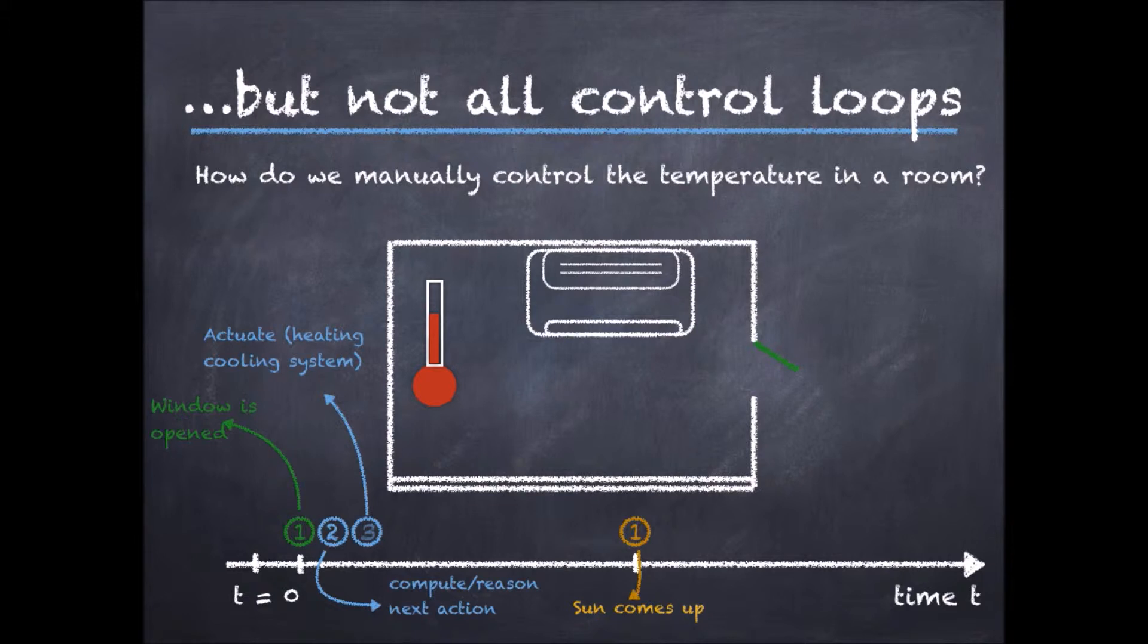And only then an appropriate action needs to be selected and enforced. Again another event might happen and the human operator is called to act. The controller in this case, the human operator, is reacting to events and this is an example of an event-triggered control loop.